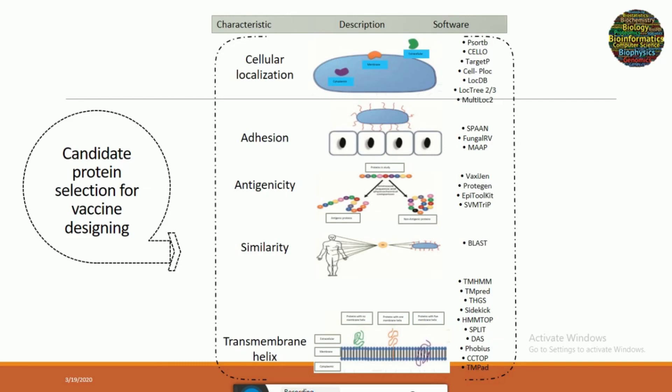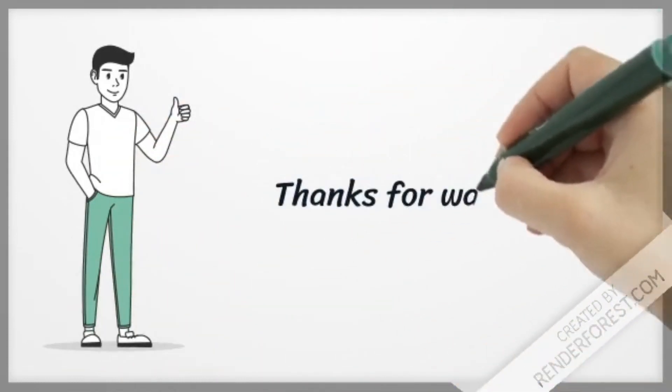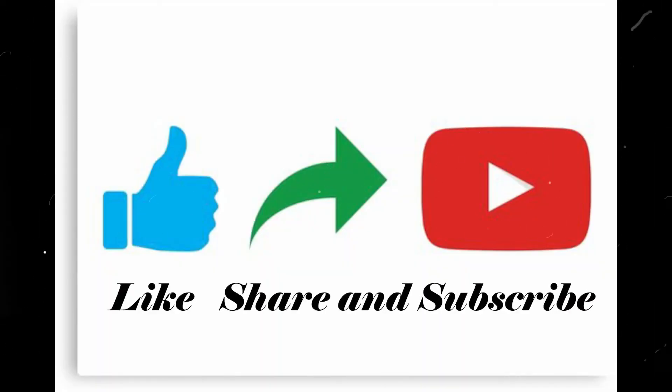These are the five parameters for selection of candidate proteins. In our following lectures we will practically perform all steps — subcellular localization, adhesion, antigenicity, human similarity, and transmembrane helix — and move on to further lectures. We'll see you next time.